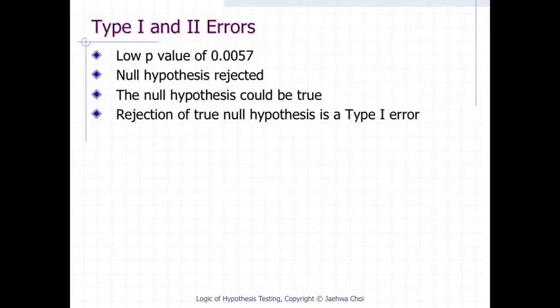it is possible that the null hypothesis of no true difference between obese and average weight patients is true, and that the large difference between sample means occurred by chance. If this is the case, then the conclusion that physicians intend to spend less time with obese patients is an error. This type of error is called a Type 1 Error.